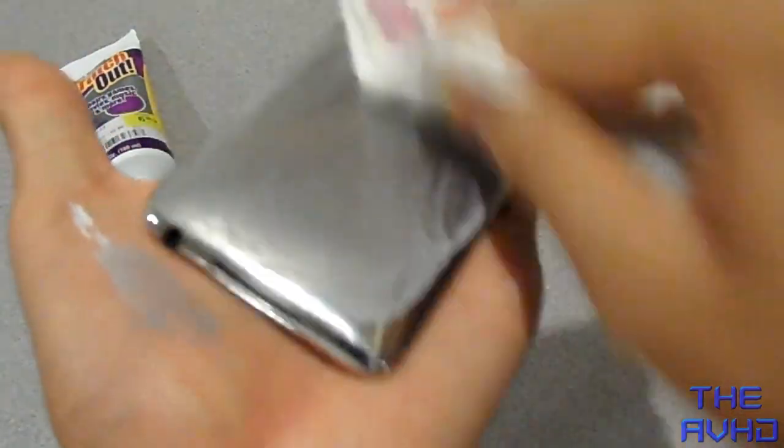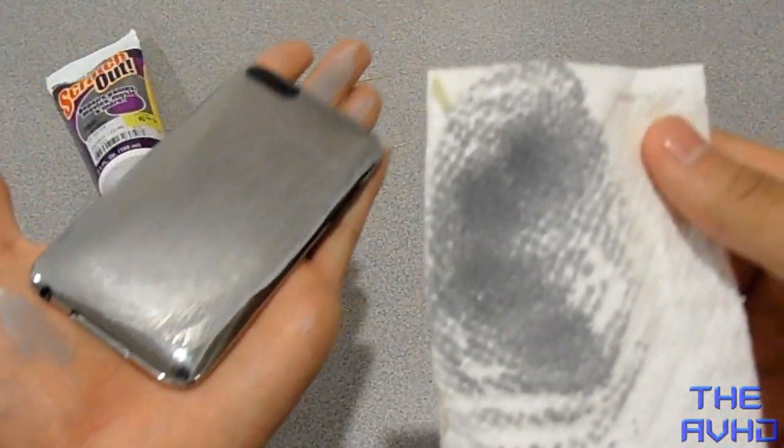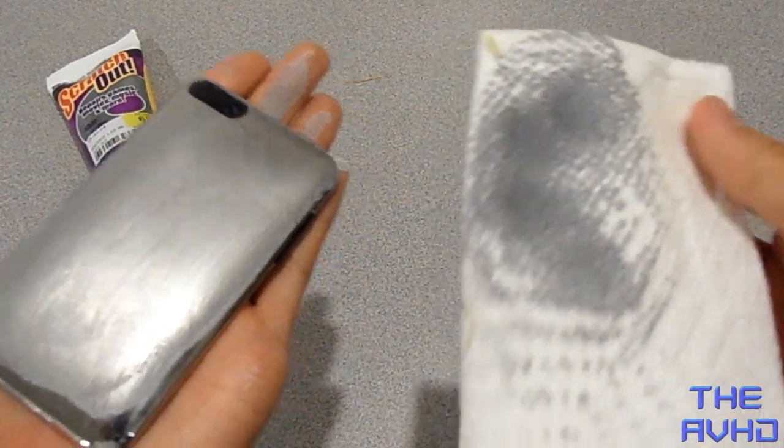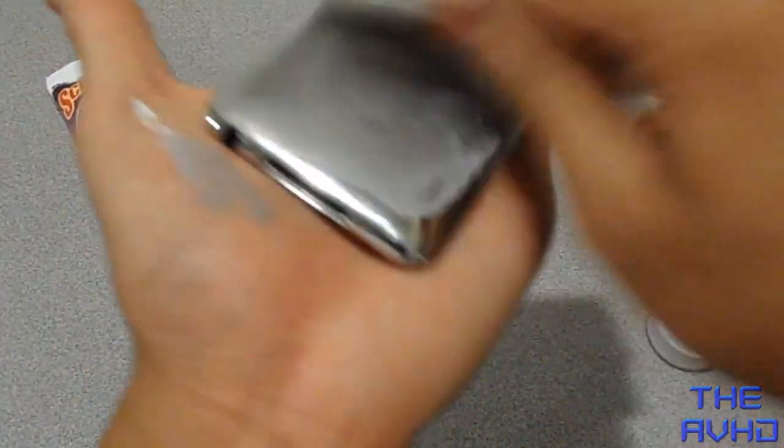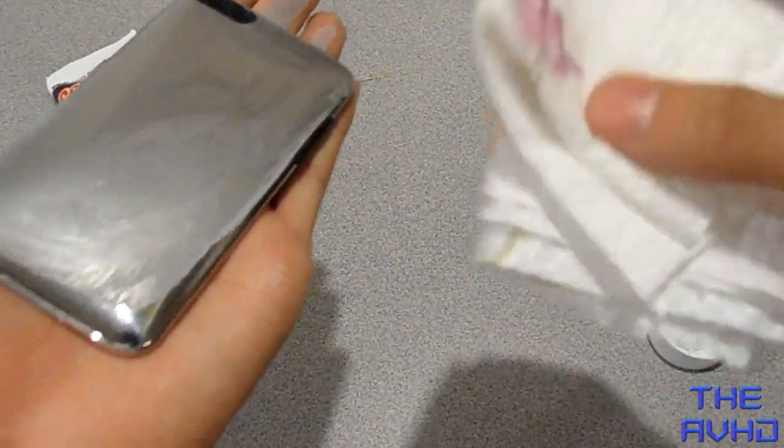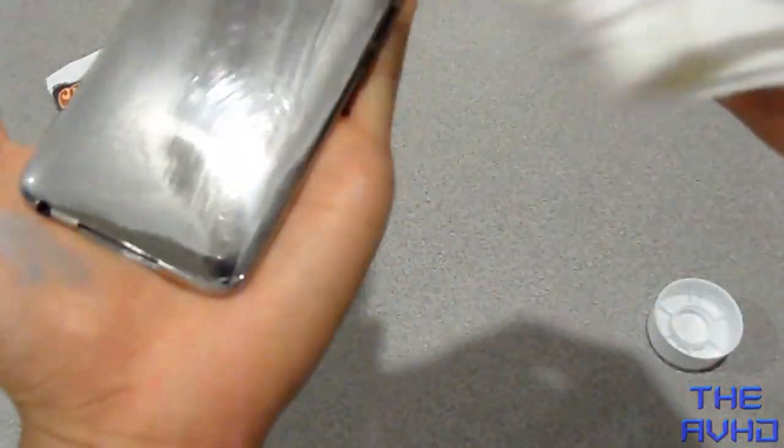You're supposed to polish it on there, and then when it dries, you're supposed to wipe it off. As you can see, the white paste is turning black. I'll just wipe it off for now.